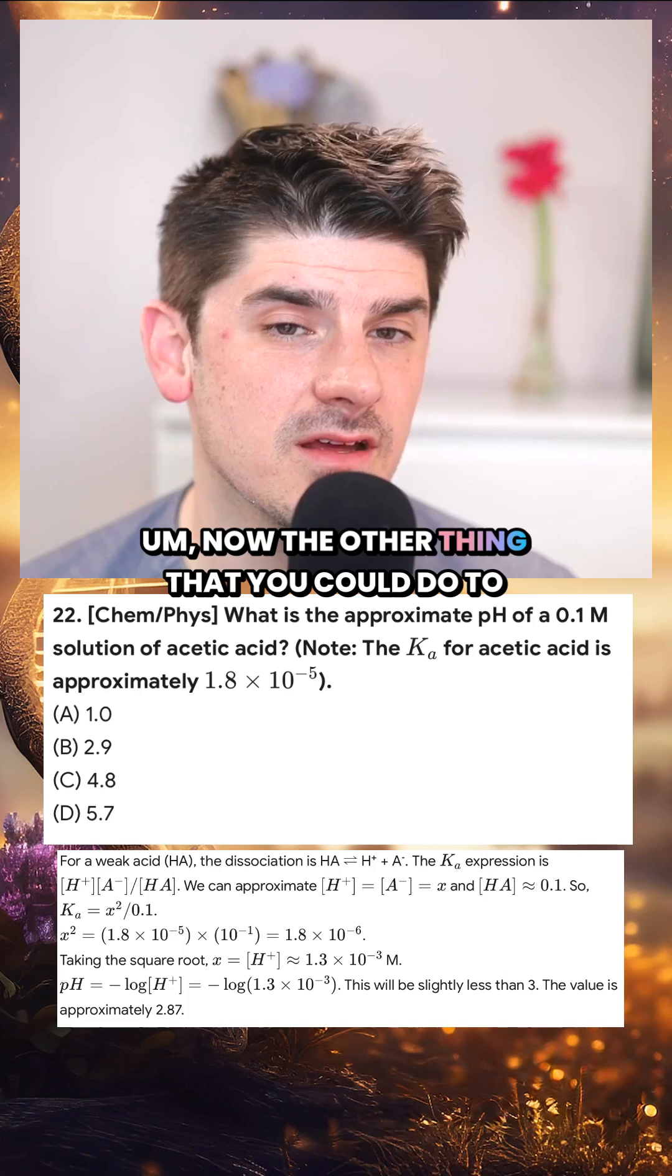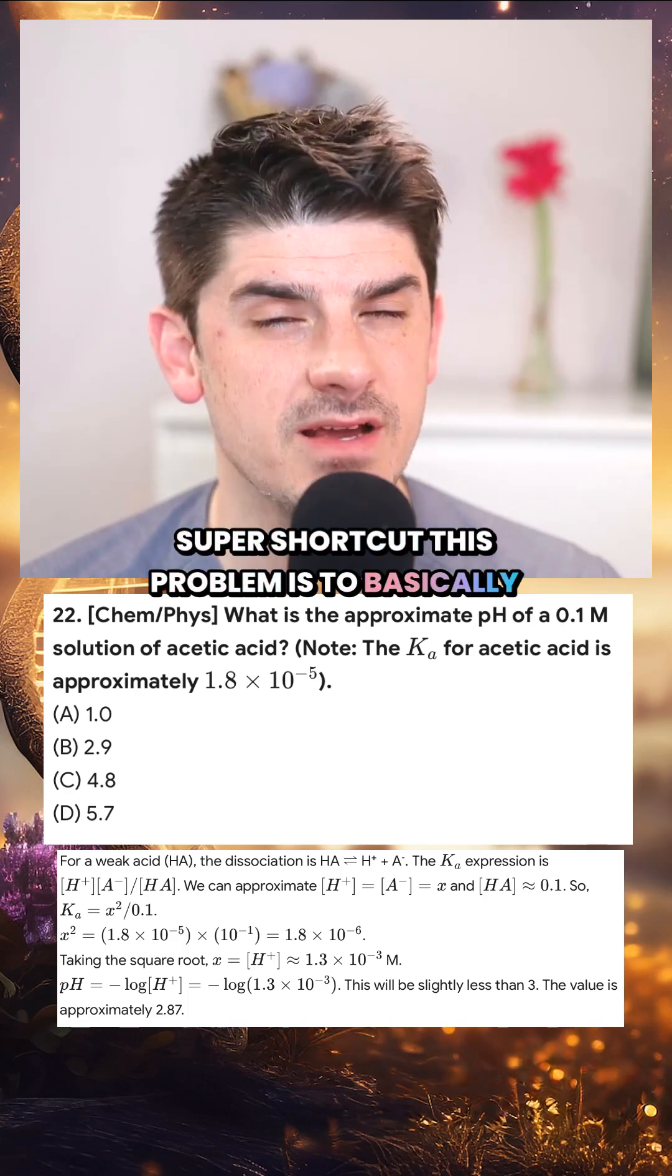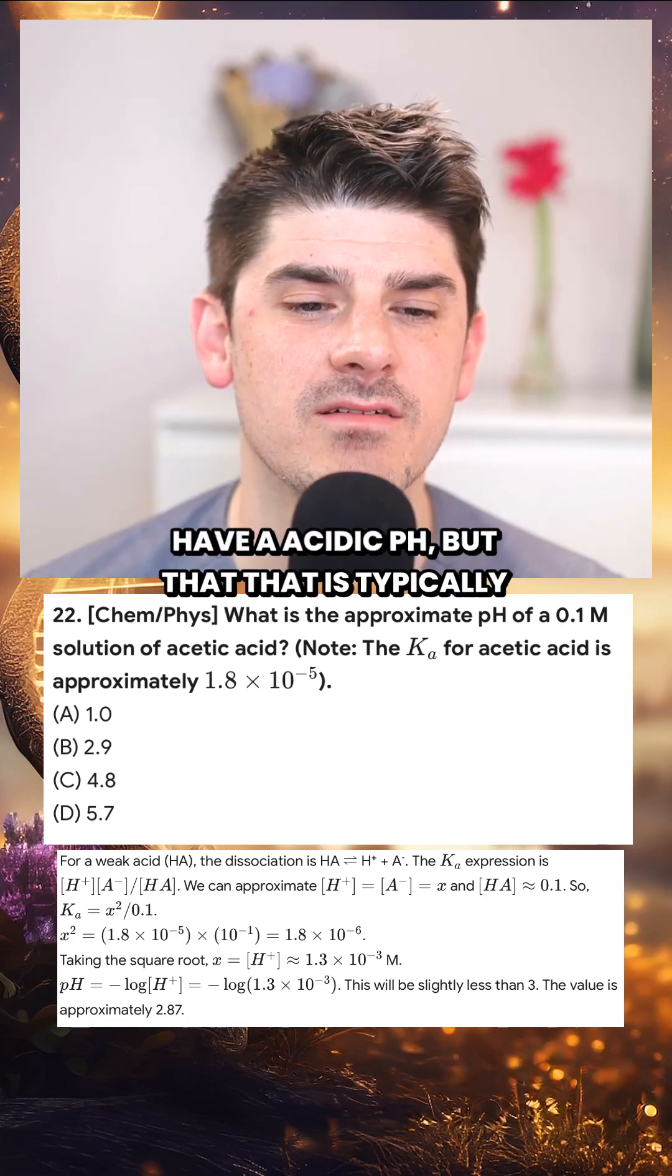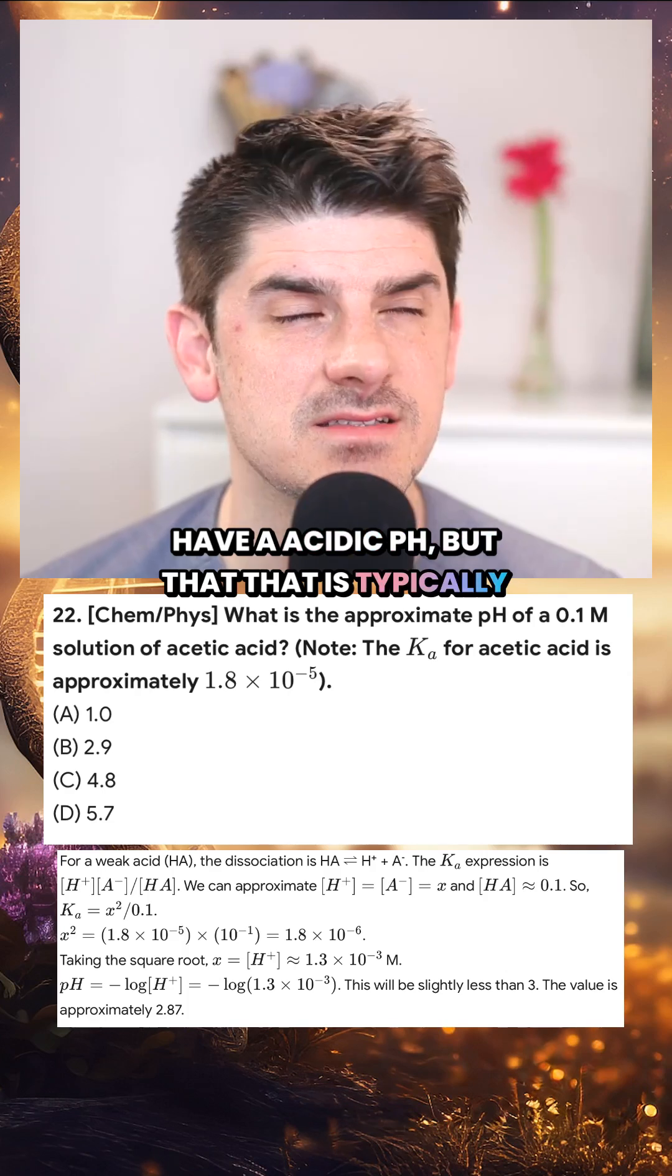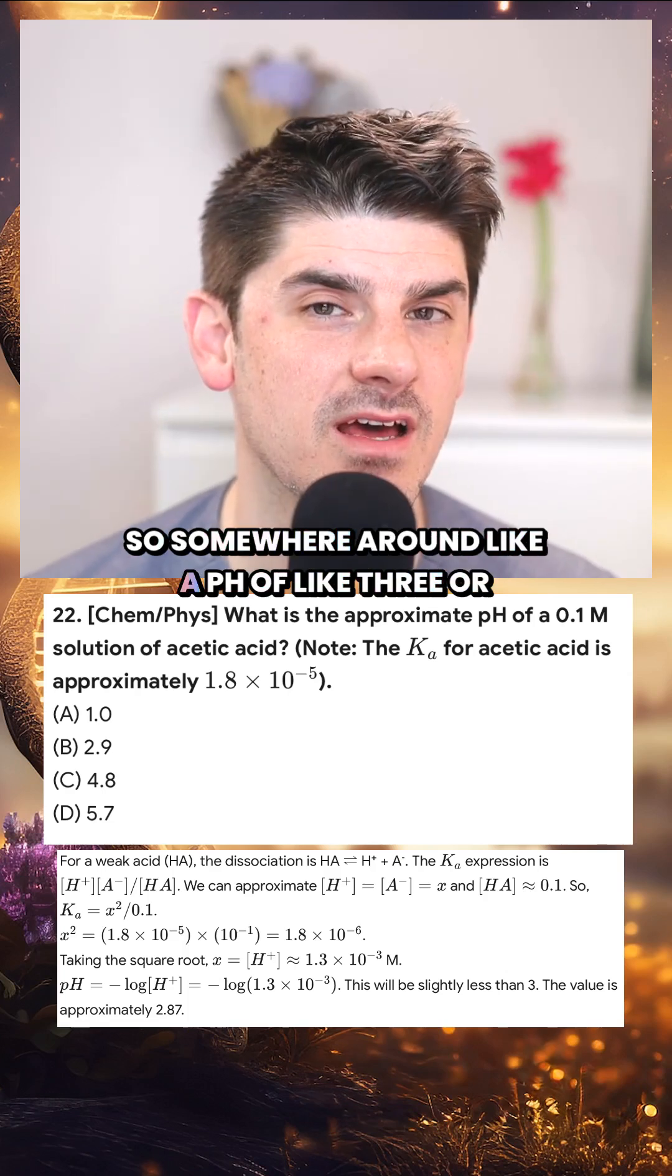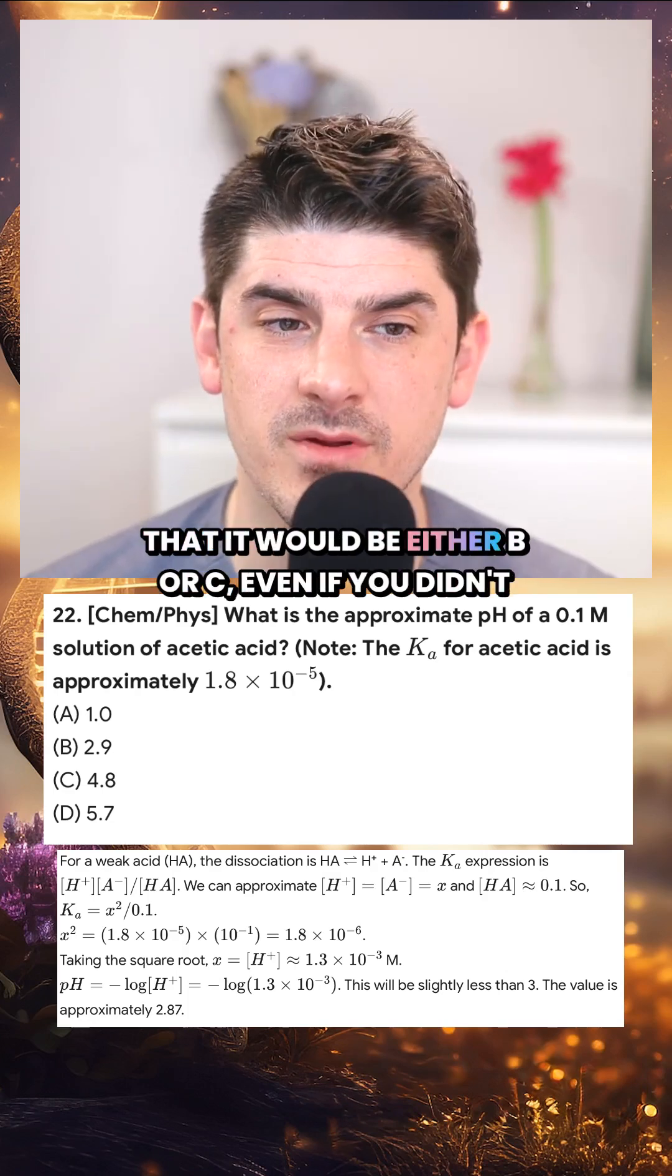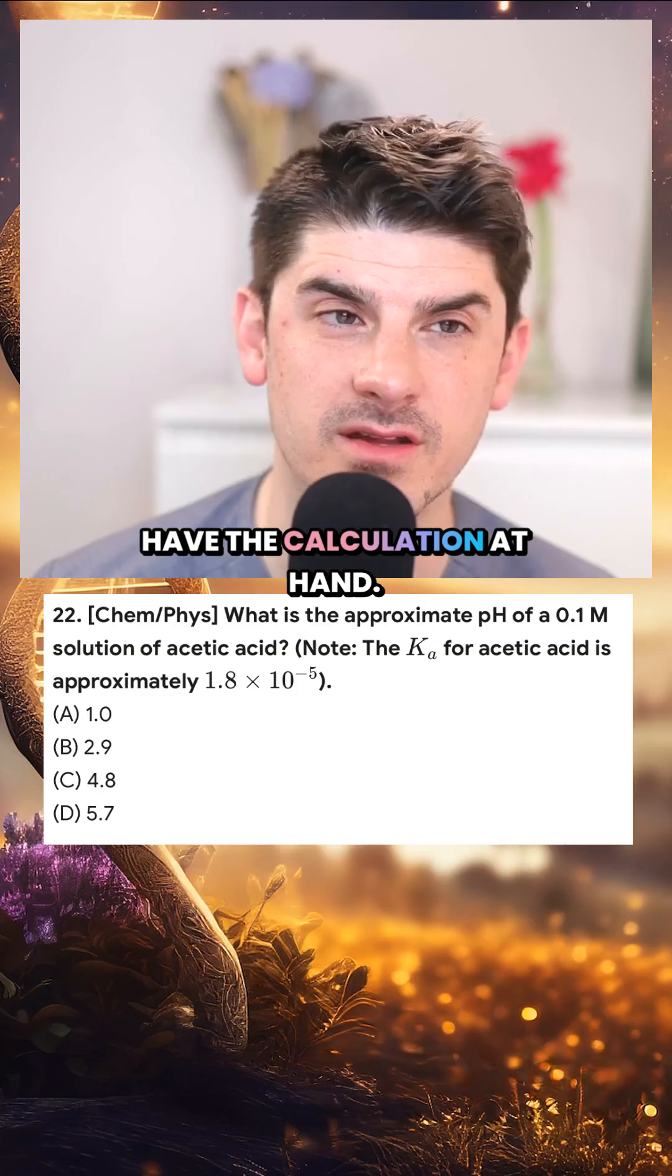Now, the other thing that you could do to super shortcut this problem is to basically just remember that a very weak acid is going to have an acidic pH, but that is typically going to be in the weak acid range, so somewhere around a pH of 3 or 4 or 5. So you could pretty much immediately guess that it would be either B or C, even if you didn't have the calculation at hand.